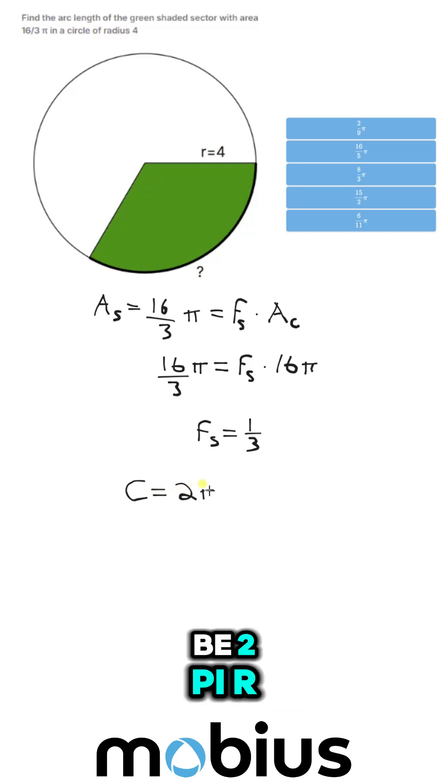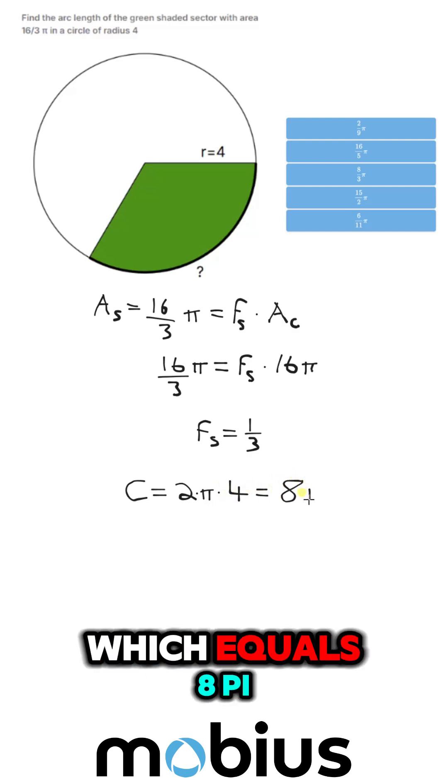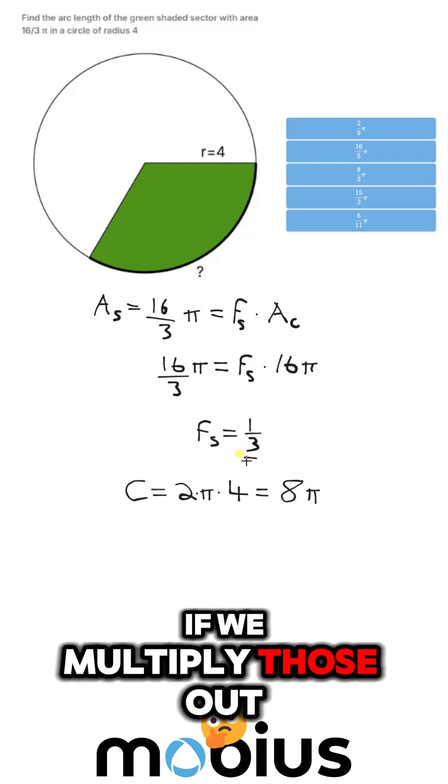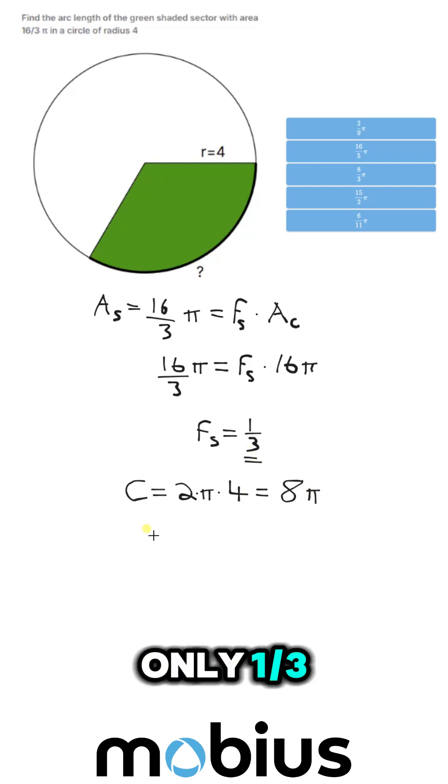is going to be 2 pi r. And r is 2 times pi times 4, which equals 8 pi if we multiply those out. And our fraction is only 1 third,